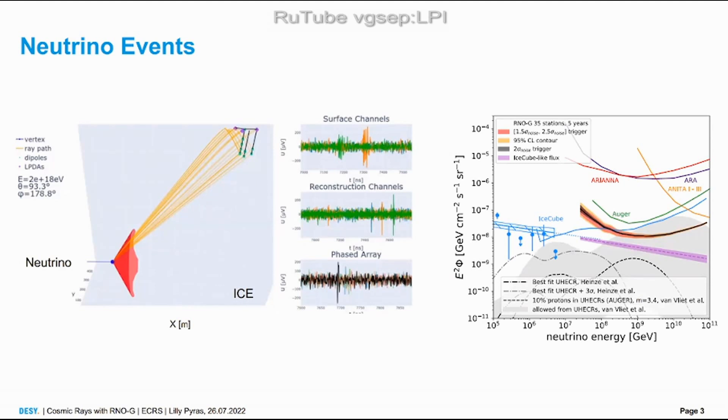This is how we imagine a neutrino event would look like. We have here a detector and the neutrino is coming in, showers, and the radio emission is the strongest on this red cone which we call the Cherenkov cone because it's a Cherenkov-like effect which is at 56 degrees in ice.